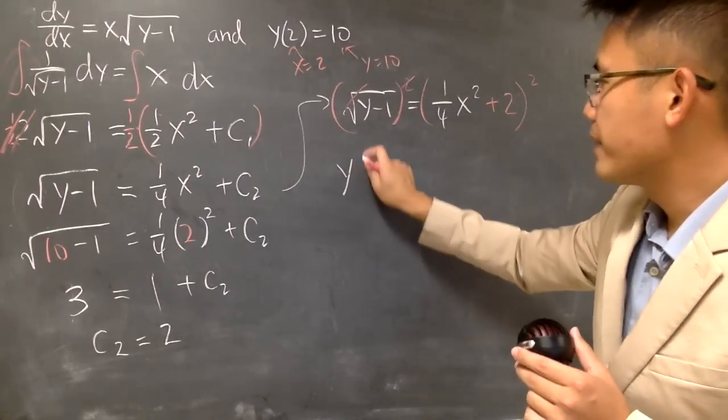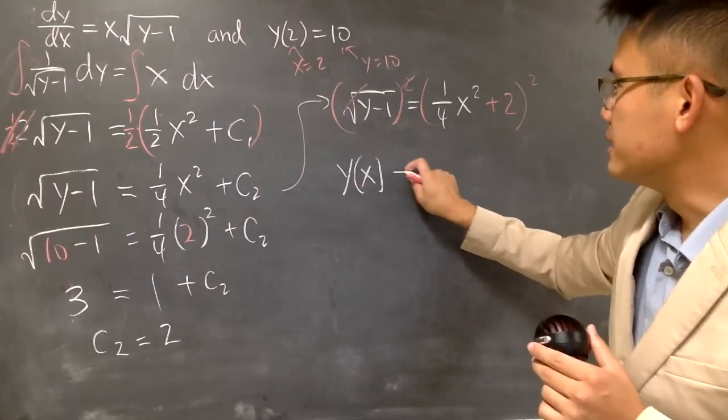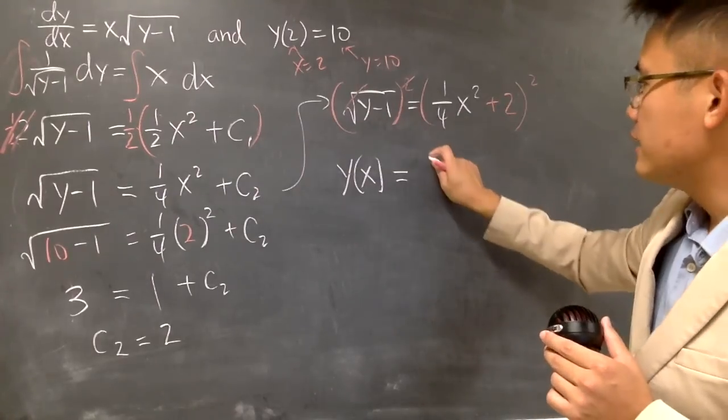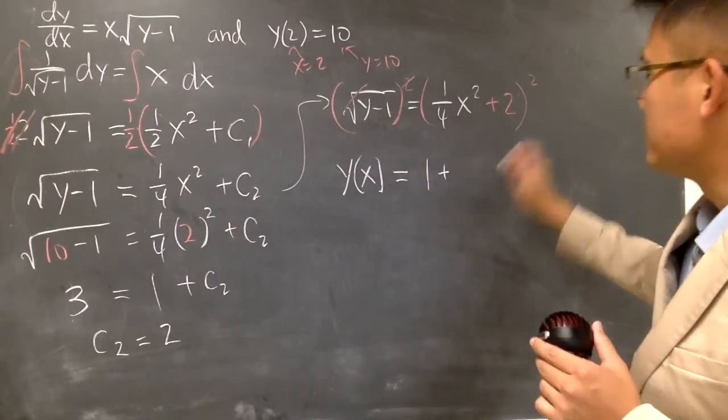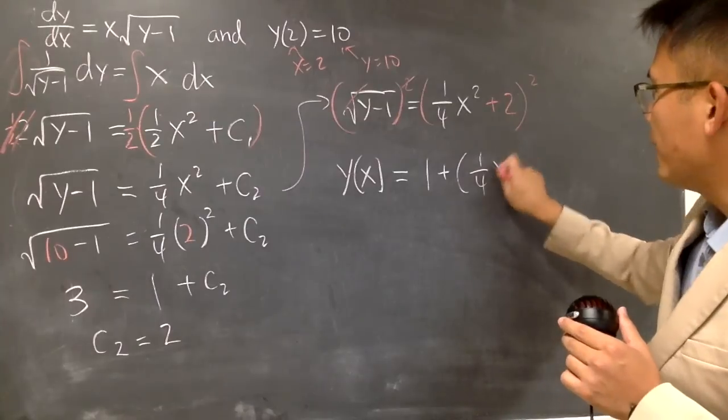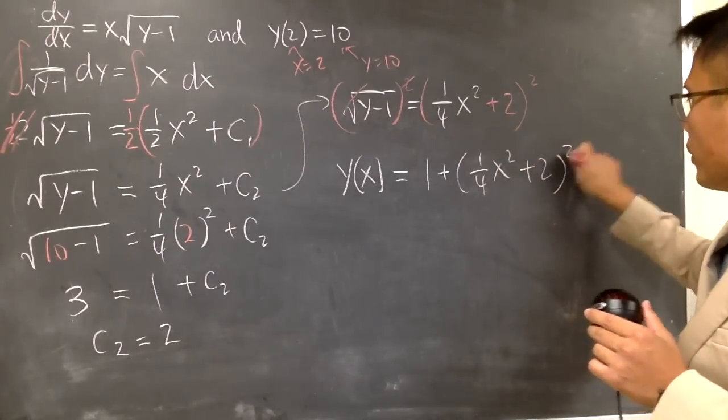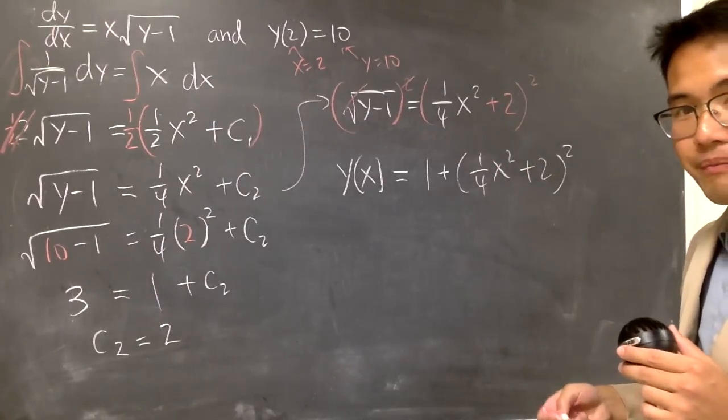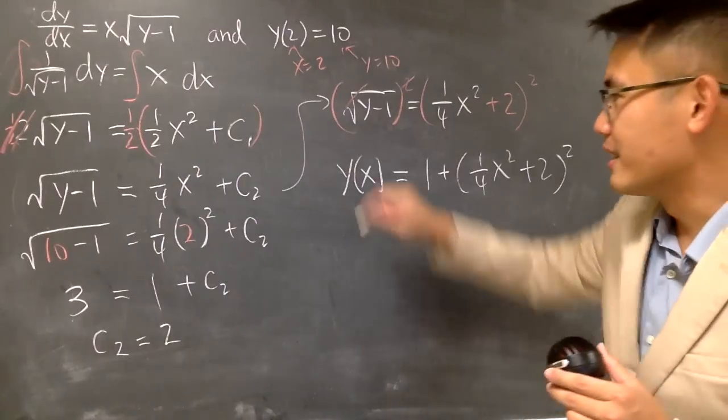So I get y as a function of x. This is equal to positive 1 plus this, so 1/4 x squared plus 2. Altogether we have this squared. And this right here is it.